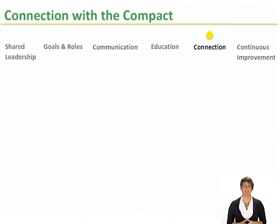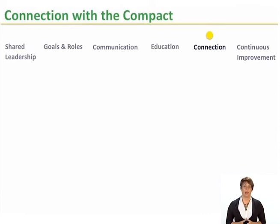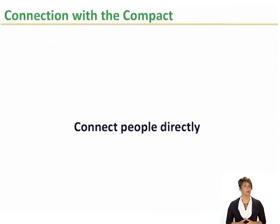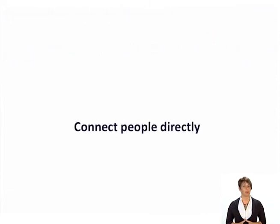Part 3: Connection — the Compact. The school community's goals and roles are established in the compact. Community members have been educated. Now it's time to connect people directly so that they can learn from each other about their work together in pursuit of the school community's goals. That is the topic of Part 3.